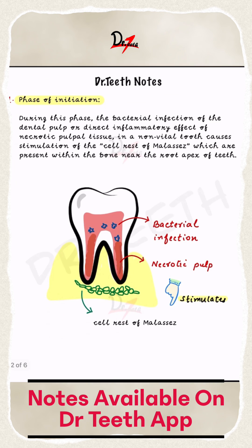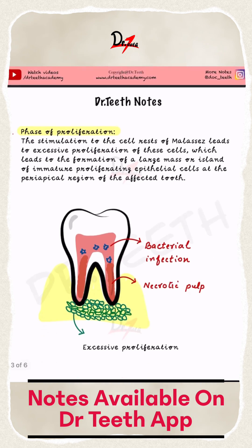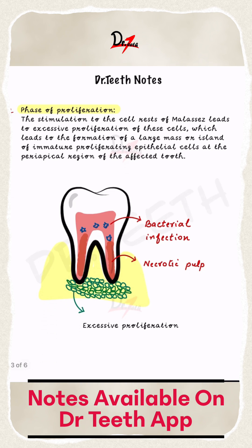In the phase of initiation, we have a tooth that is decayed, it has bacterial infection, and it has a necrotic pulp. All these factors stimulate the cell rests of Malassez, which are present within the bone near the root apex. Then in the phase of proliferation, these cells start proliferating and form a large mass or island of immature proliferating epithelial cells.